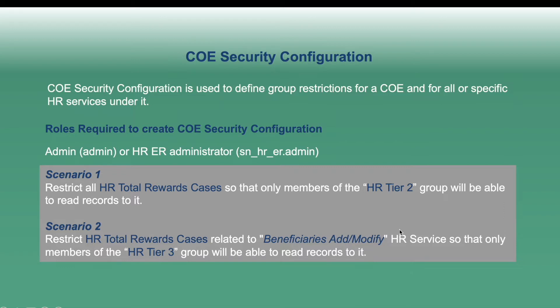Let's say if you want to make cases within HR benefit COE visible to only particular group members — for example, HR tier 2 group — you can create a COE security configuration for that COE and assign it to that group. The cases will be visible to only that particular group's members. You don't have to create ACL for that. So we can say it's a very easy way to restrict data visibility.